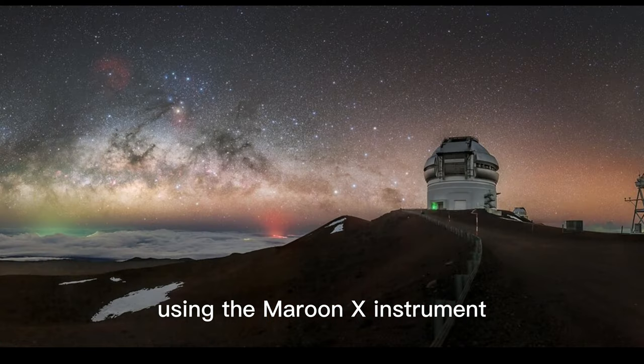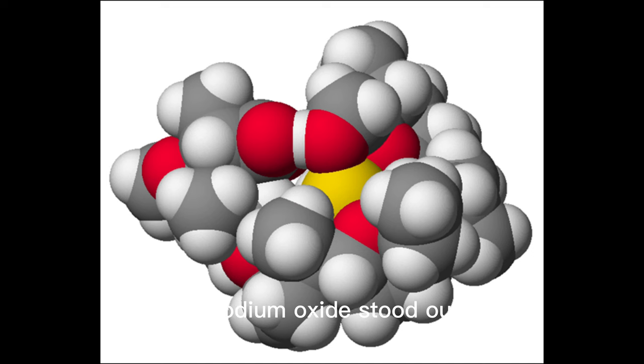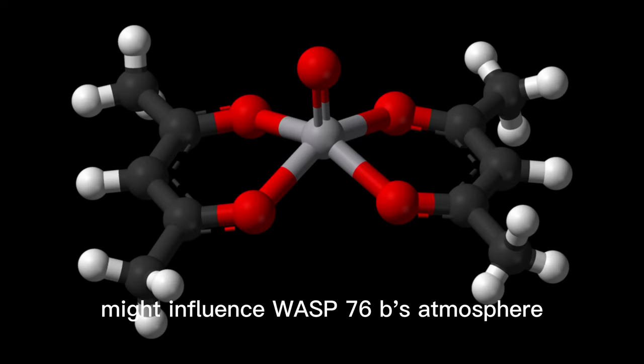Using the Maroon X instrument on the Gemini North Telescope, elements like lithium, sodium, and iron were found. Among these, vanadium oxide stood out. This element, known for dramatic color changes, might influence WASP-76b's atmosphere.